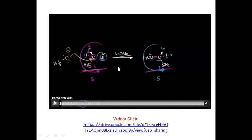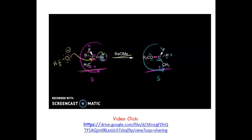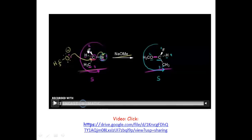Inversion of configuration does not mean that R is always converted to S or vice versa. Taking the CH₃O⁻/Br/F example: to find R/S configuration, assign priorities — Br is 1, F is 2, C is 3, and H is 4 — giving an S configuration for the reactant. In the product with methoxy, the priorities shift: F becomes 1 and O becomes 2, and the product also has S configuration. Yet we still say there is inversion of configuration because the orientation of the three groups is completely reversed — they were on the left side in the reactant and have moved to the right side in the product.